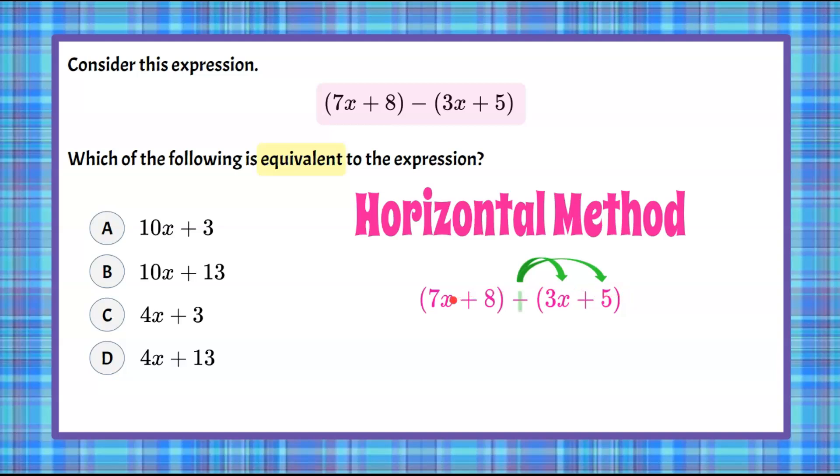So we're going to now identify our like terms. Remember, we're doing add the opposite, add the opposite. So we're doing negative 3x and negative 5 when we combine, which is the same as subtracting. So our like terms, our variable terms, are 7x and negative 3x.